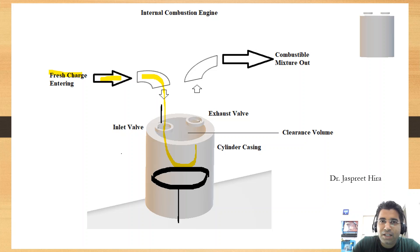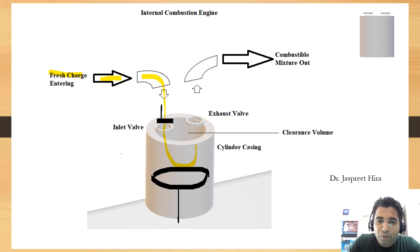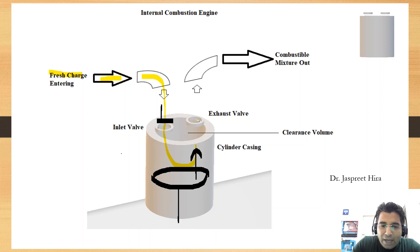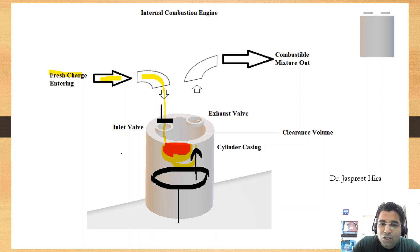In the next process, the inlet valve closes. When the inlet valve closes, there is a barrier. The fresh charge accumulated inside the cylinder is then compressed by the piston in the upward direction. This fresh charge is compressed and as a result its temperature and pressure rise.